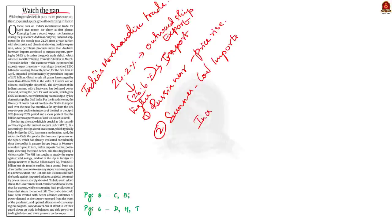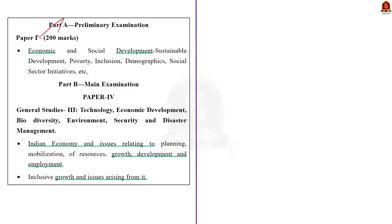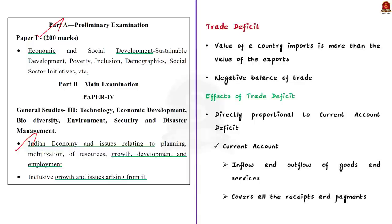This is the essence of the article. In this context, let us learn about trade deficit in detail. The syllabus relevant to this article is highlighted — just go through it. First of all, what is a trade deficit? In simple terms, a trade deficit occurs when the value of a country's imports is more than the value of its exports.